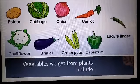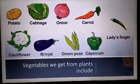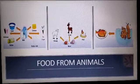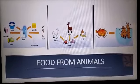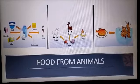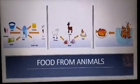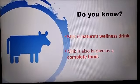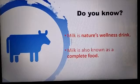Now let's see what food we get from animals. From animals we get milk — you all must be drinking milk! Milk is very important. Products made from milk are curd, milkshake, butter, cheese, ice cream, and buttermilk. Another thing we get from animals is meat and fish. Do you know milk is nature's wellness drink? Milk is also known as a complete food.